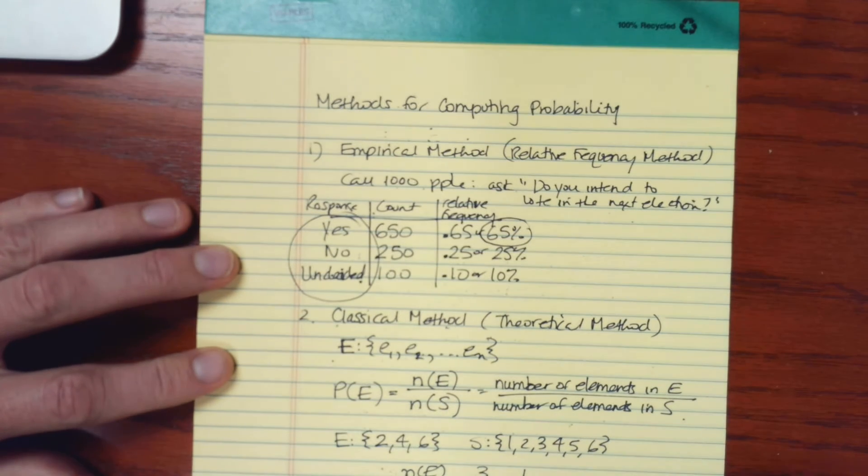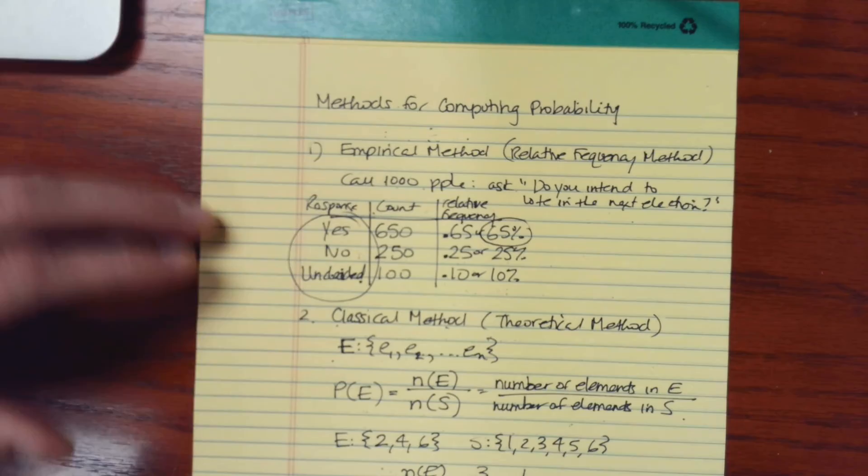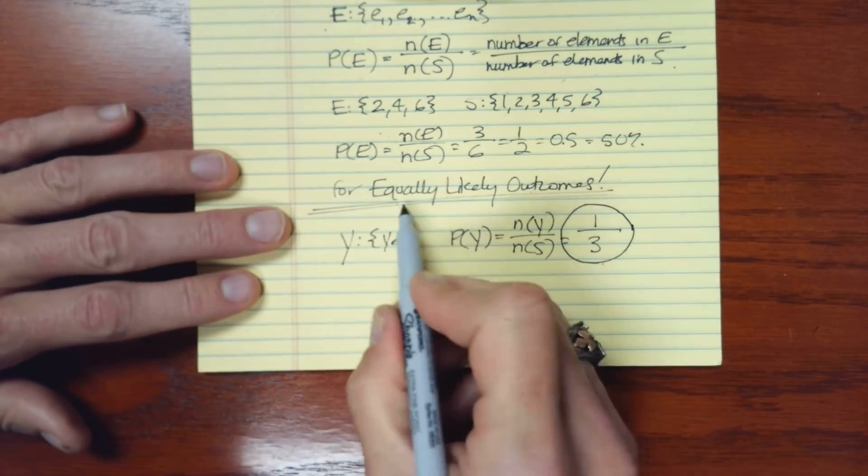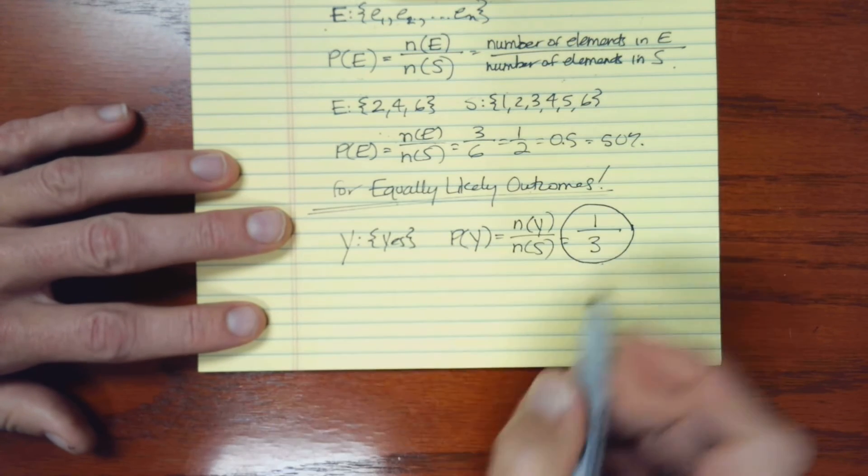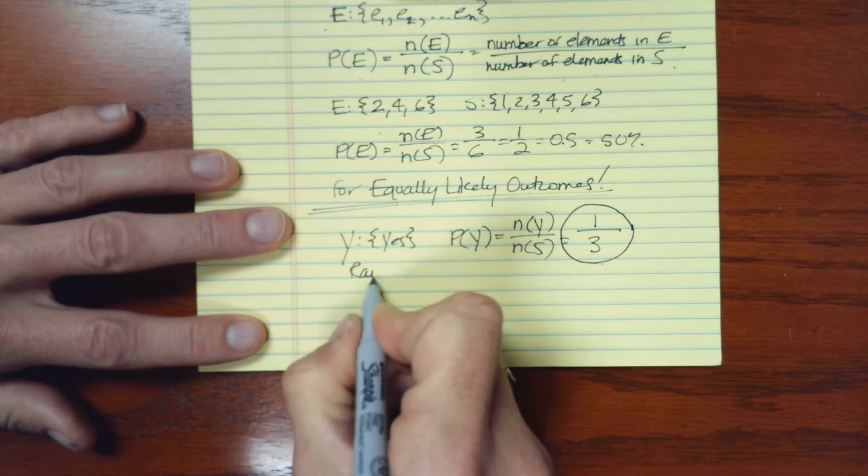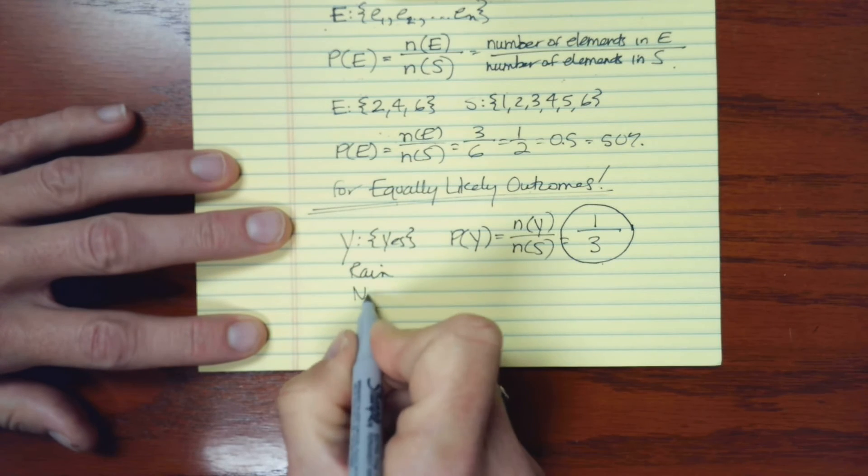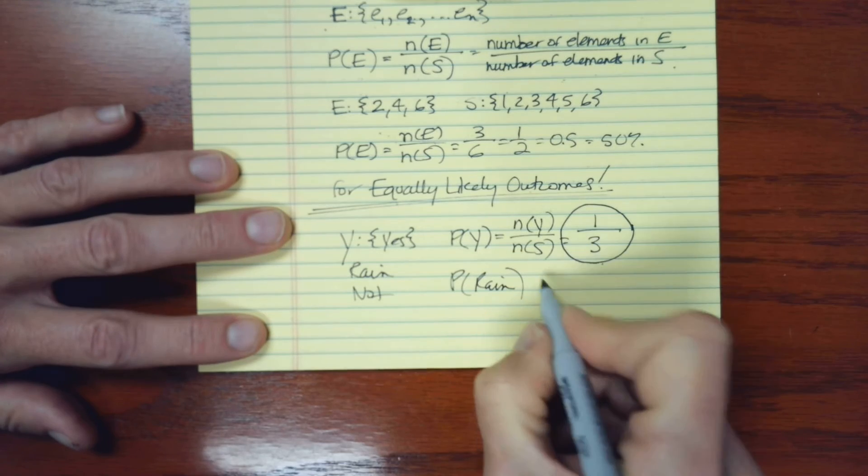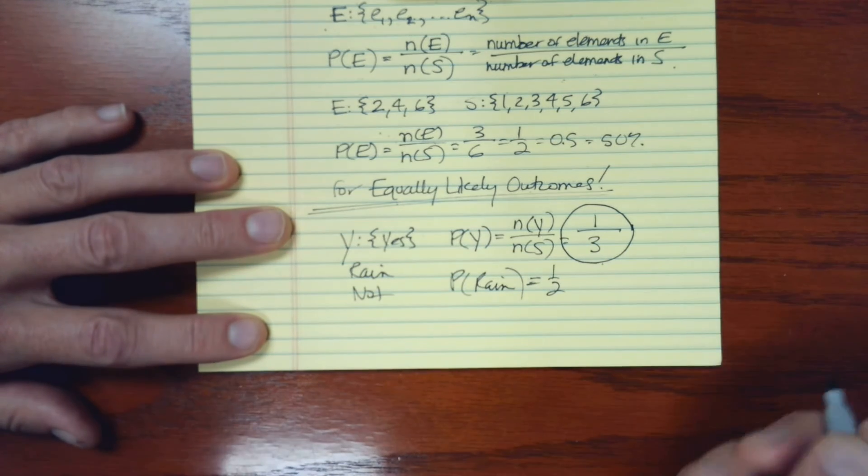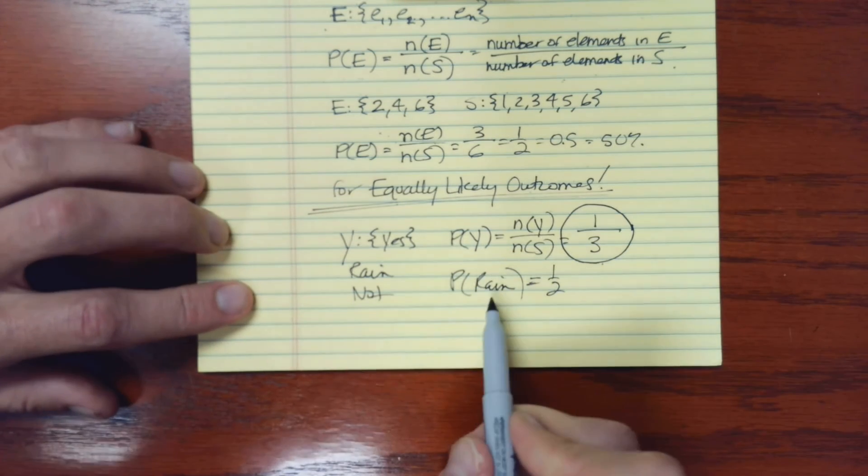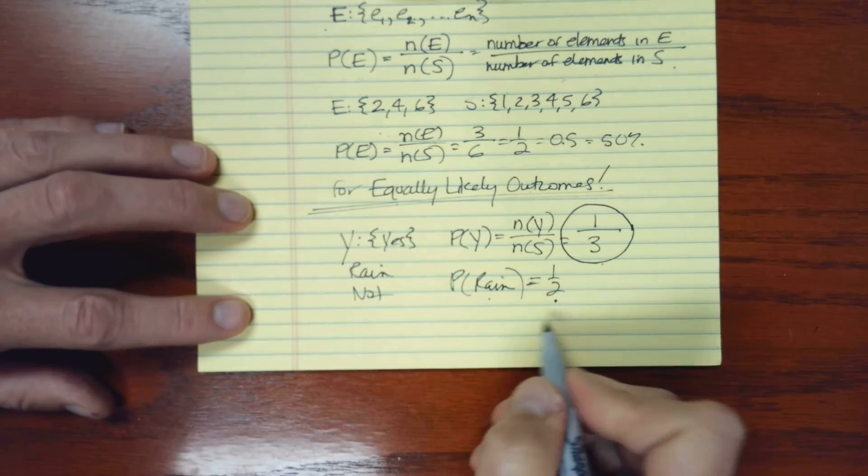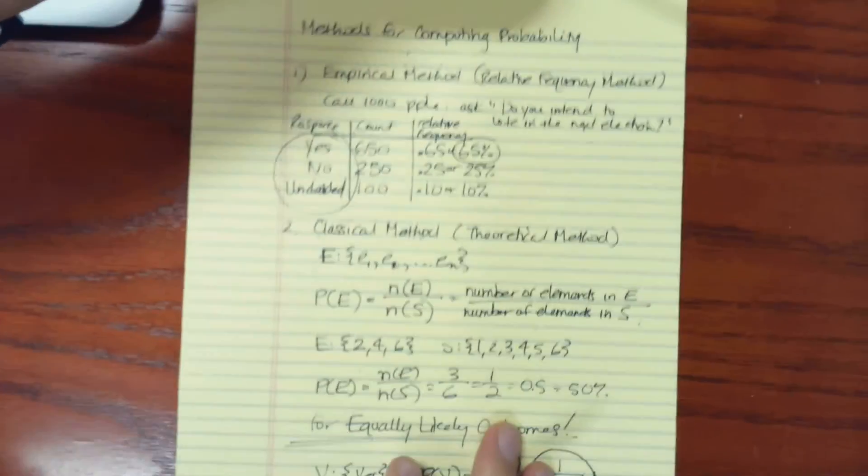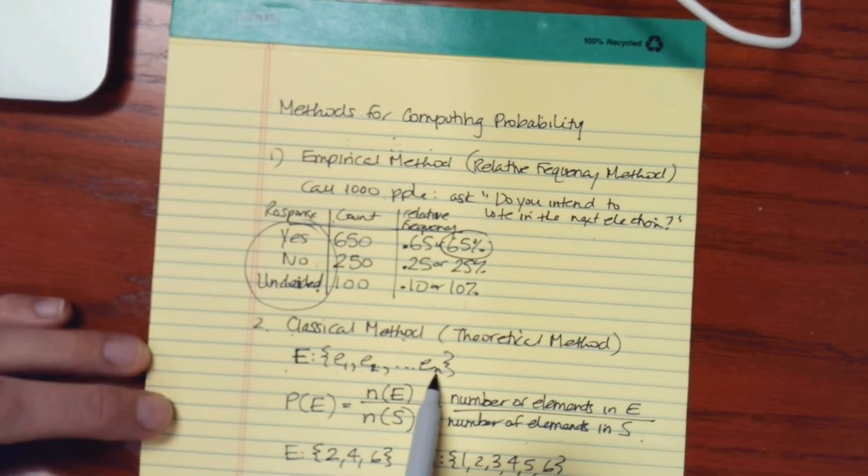Another common example to show why we would not want to use the classical method when things are not equally likely: if I said that today it's either going to rain or it's not, what's the probability of rain? Well, it's not always one-half. Even though that's one possibility out of two, on a given day the possibility of rain could be zero percent or up to 100 percent. Just make sure that when you're using the classical method, each of these outcomes is equally likely.